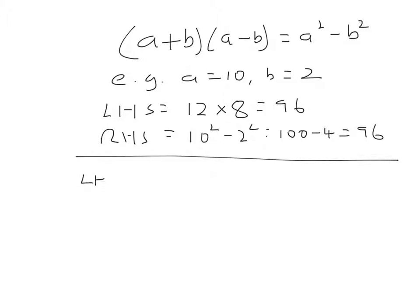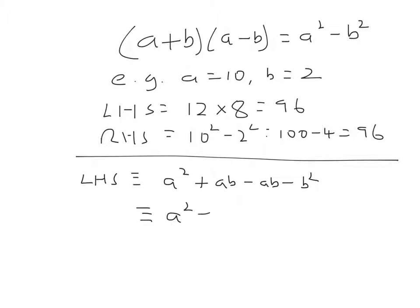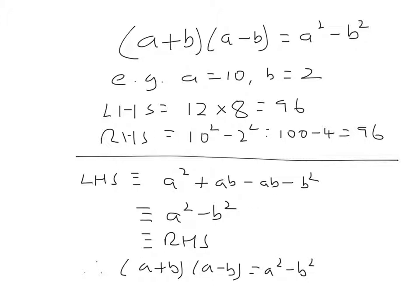Here's the proof. The left hand side is the same as a squared plus ab minus ab minus b squared. If you're not sure about that — I've done a times a, that's a squared. I've done a times b, that's ab. I've done a times minus b, that's minus ab. I've done b times minus b, that's minus b squared. This is a squared minus b squared, since ab minus ab is 0. So that equals the right hand side. Therefore, a plus b times a minus b equals a squared minus b squared, and the proof is complete.